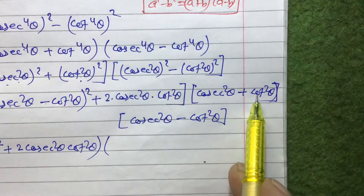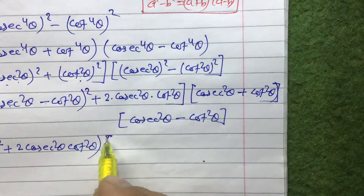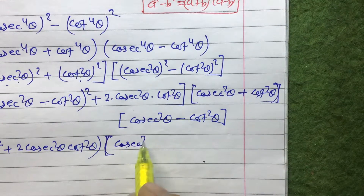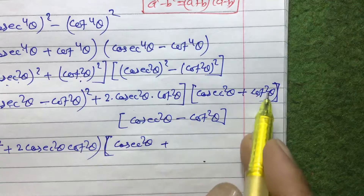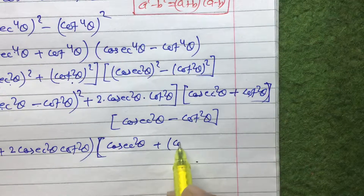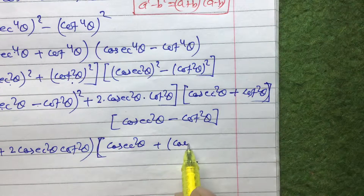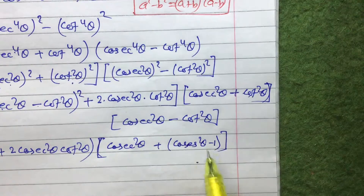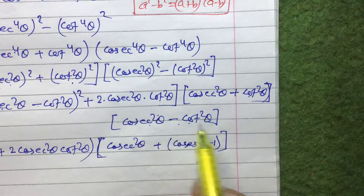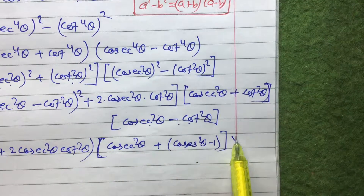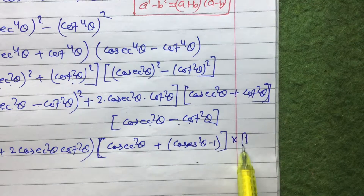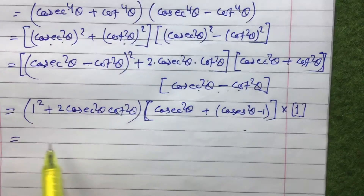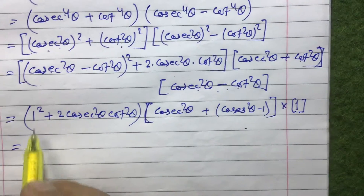In the second factor, we don't want cot; we need to express everything in terms of cosec. So we replace cot²θ with cosec²θ - 1. The second factor becomes: cosec²θ + (cosec²θ - 1) = 2cosec²θ - 1.